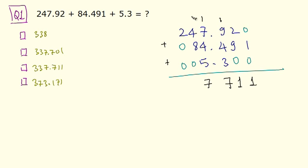So again, 7, 1 carry. 8 plus 1 is 9, plus 4 is 13. So 3, 1 carry. And 2 plus 1 is 3. And there is the decimal point. There you go, there is the answer: 337.711. So option C is the right answer.